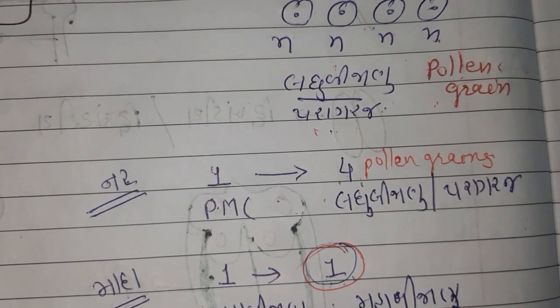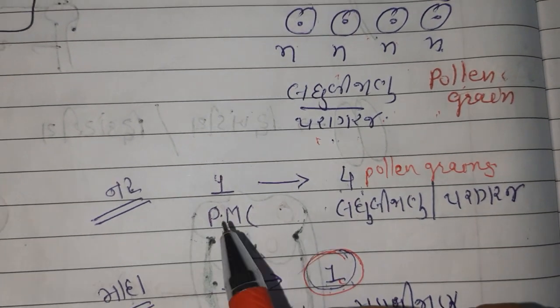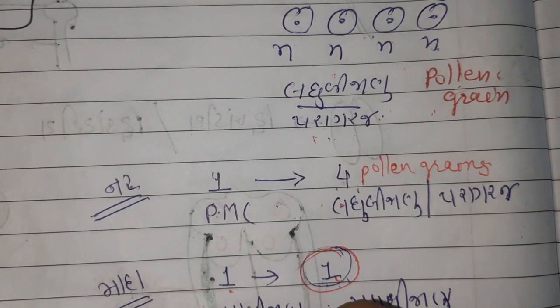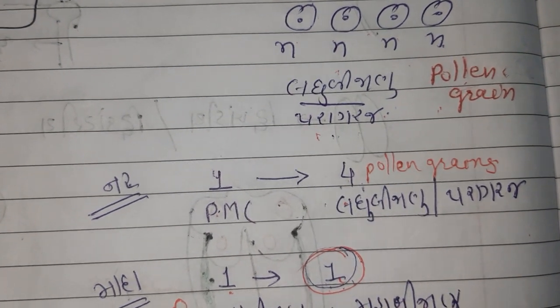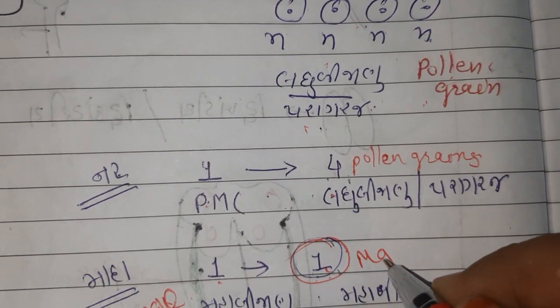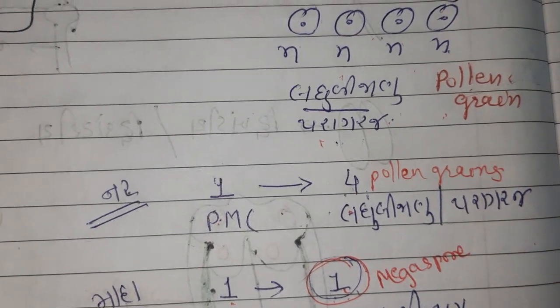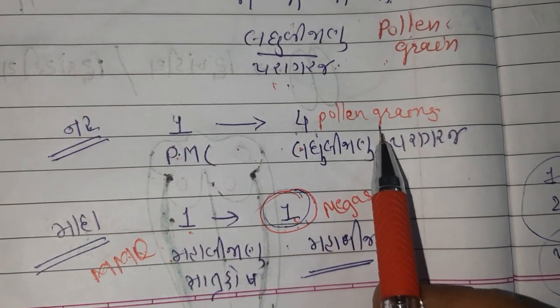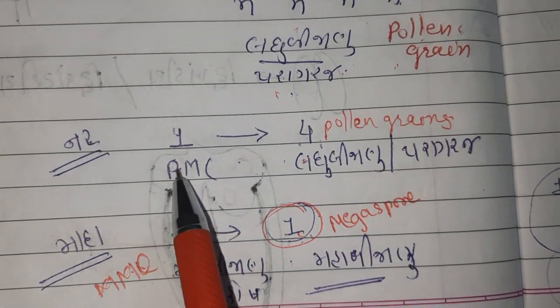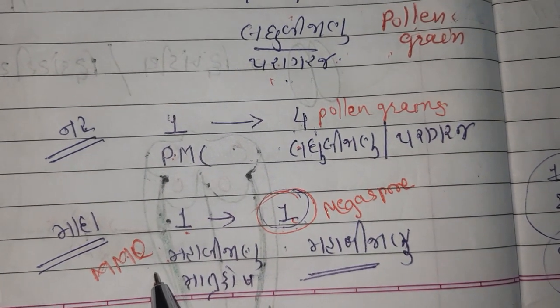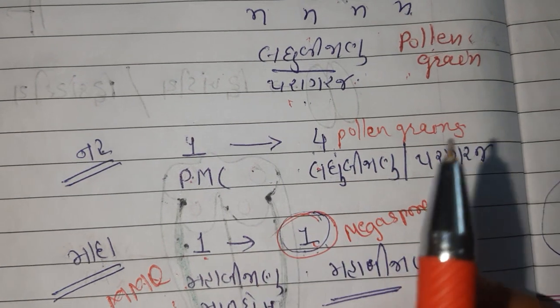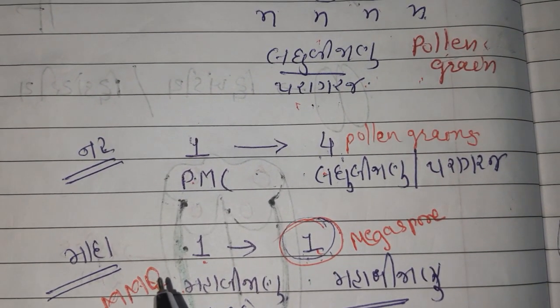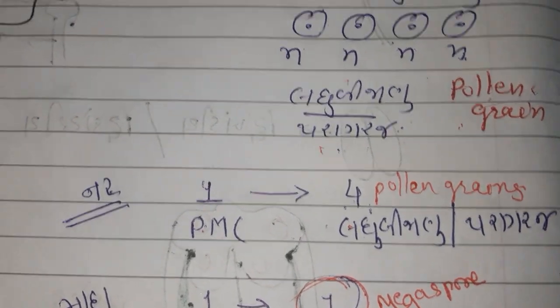Same way we'll learn in future, from one megaspore mother cell we are having one megaspore. Female mein ek se ek egg, male mein ek se chaar. So megaspore mother cell produces one megaspore, but one pollen mother cell produces four pollen grains. This is useful for formation of seed. We'll learn this in the next lecture. We'll see pollen grains.